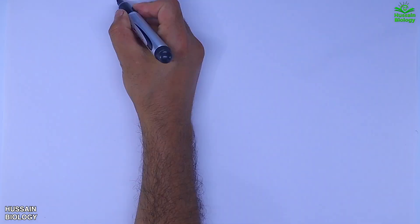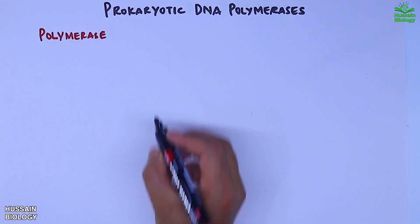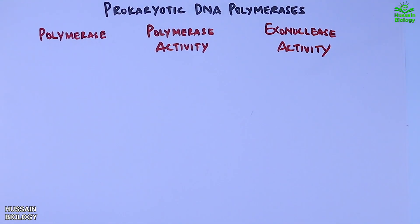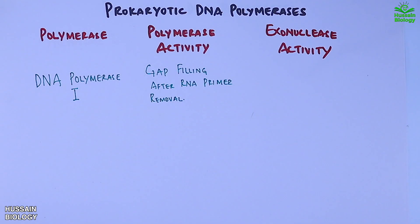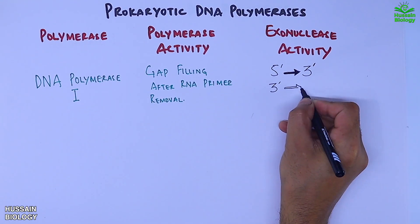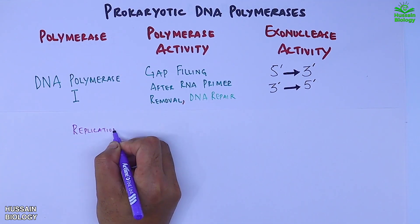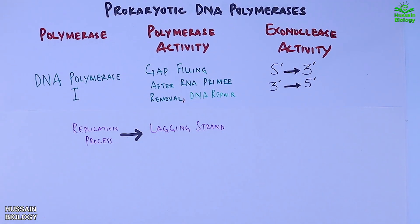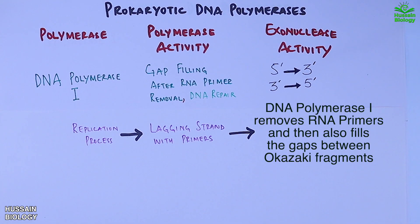Now let's explain the prokaryotic DNA polymerases in detail, looking at their polymerase activity and exonuclease activity. First we have DNA polymerase 1. It mediates gap filling after RNA primer removal from the lagging strand, aids in removal of the primer, and can also drive DNA repair pathways. During replication, the lagging strand is produced with RNA primers, and it is the exonuclease activity of DNA polymerase 1 that removes primers between Okazaki fragments. The gap between Okazaki fragments is then filled by the same DNA polymerase 1 through its polymerase activity.